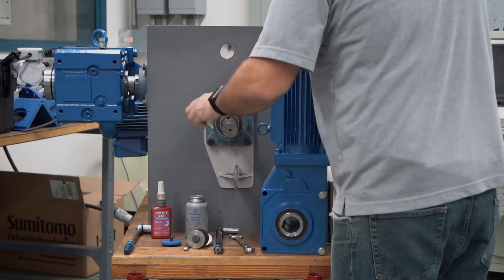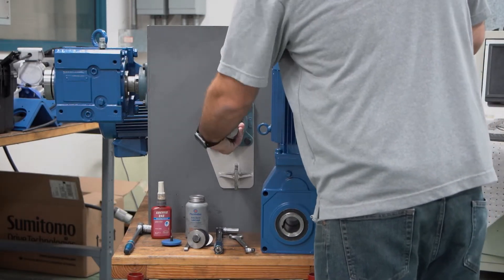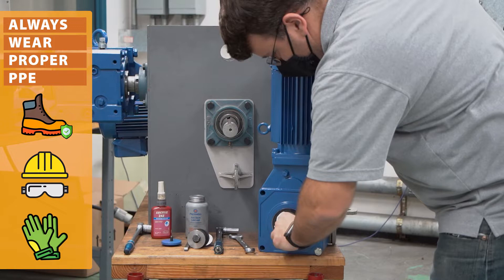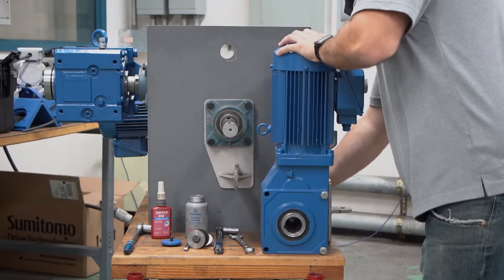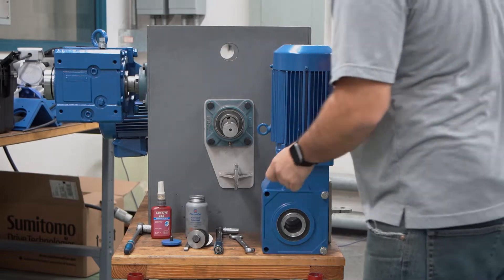The first step is make sure both your shaft and your reducer bore are clean. We don't want any debris in there, no oil. We want all dirt that may have been there from sitting or from shipping completely out of the way. Make sure that's clean and dry.